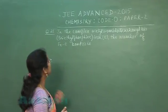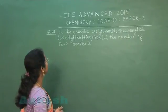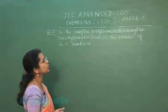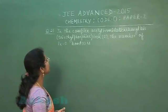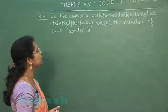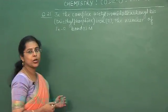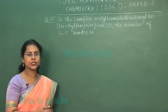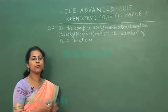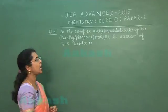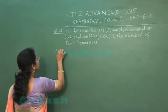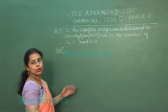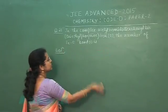Question number 21: in the complex acetyl bromido dicarbonyl bis(triethylphosphane)iron, the number of Fe-C bonds is? The name of the complex is given and we have to find the number of iron-carbon bonds. In order to find the answer, we have to draw the structure of the complex.